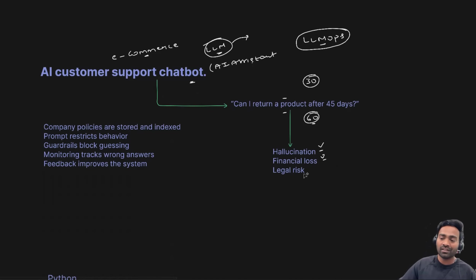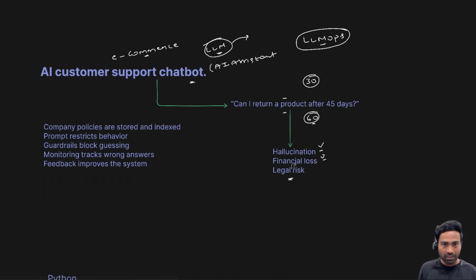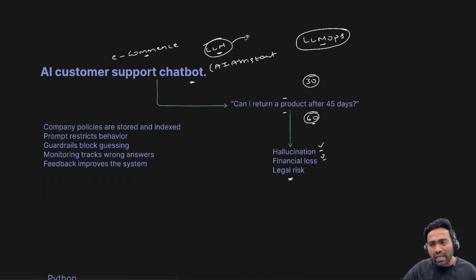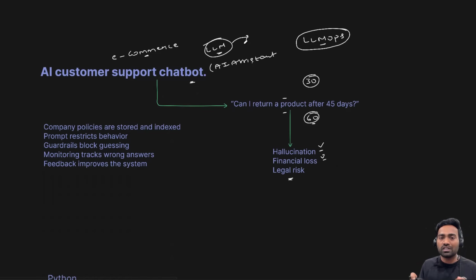What if your company policy is only 30 days? You will end up in financial losses. Even riskier, you might also end up with some kind of legal issues. Because of the hallucination, it might respond with answers against the policies of your company. This is the reason why you cannot just pick up any random large language model on the internet — they can be very powerful, but you cannot use them as-is in your organization.